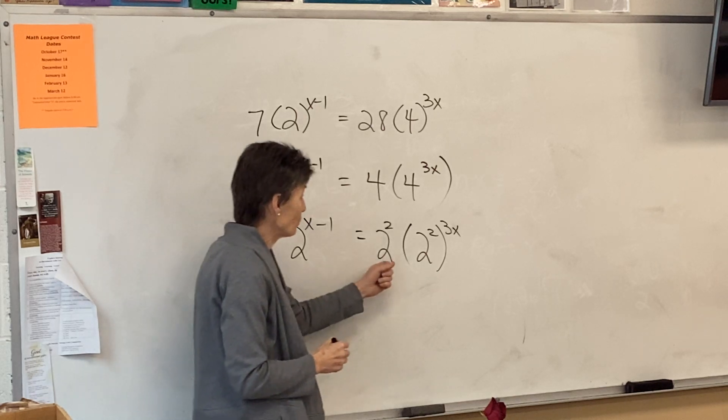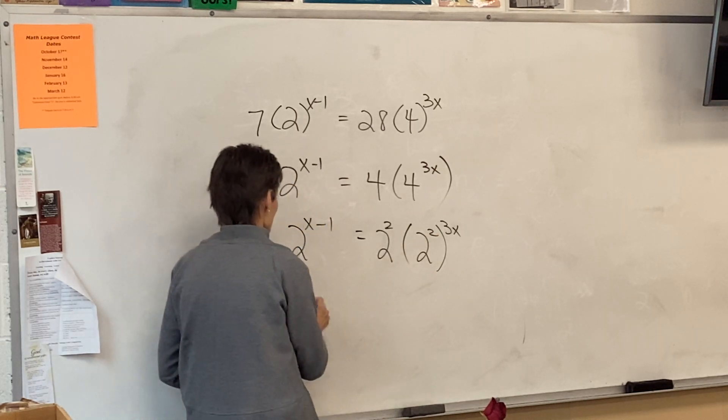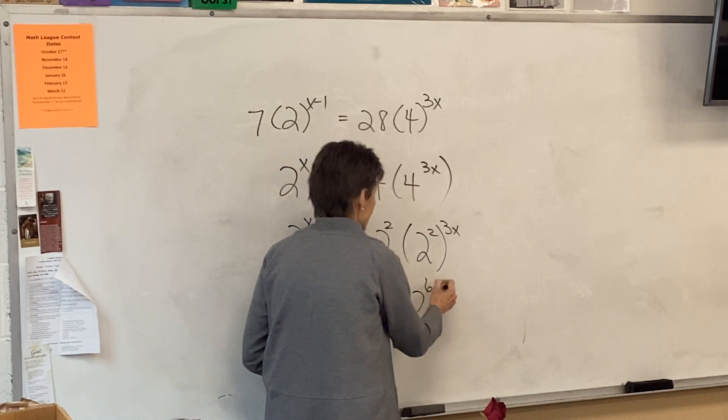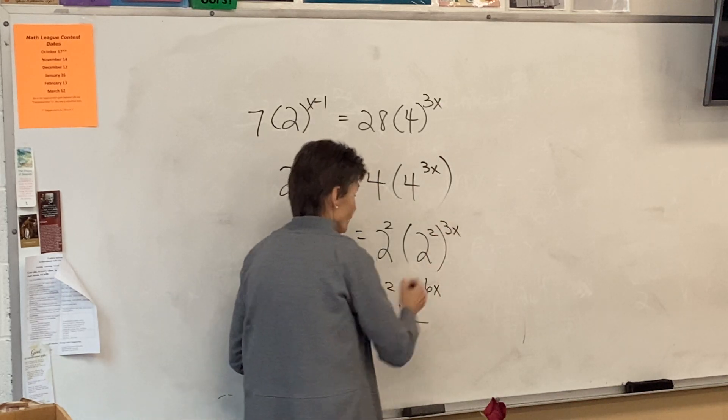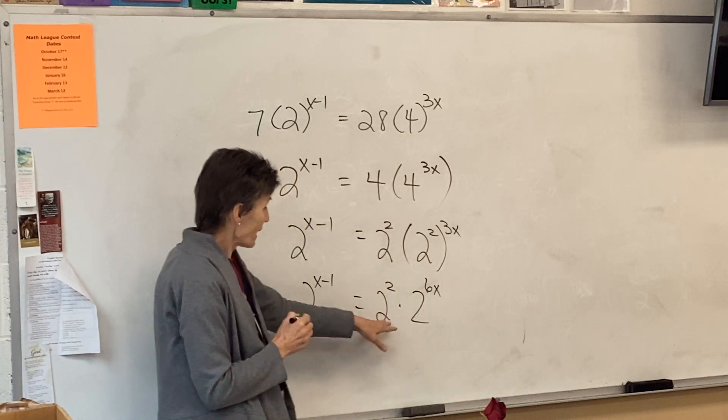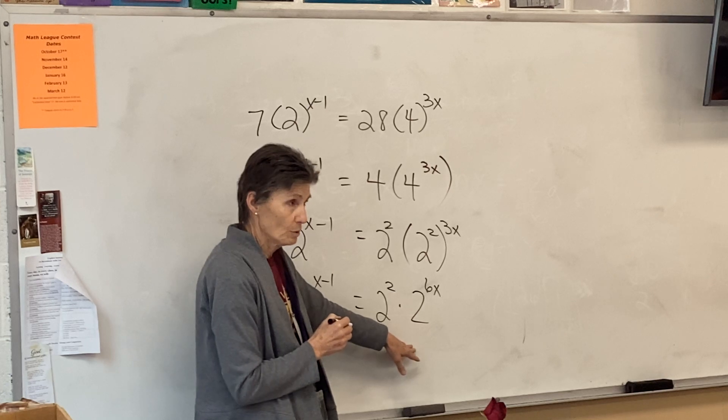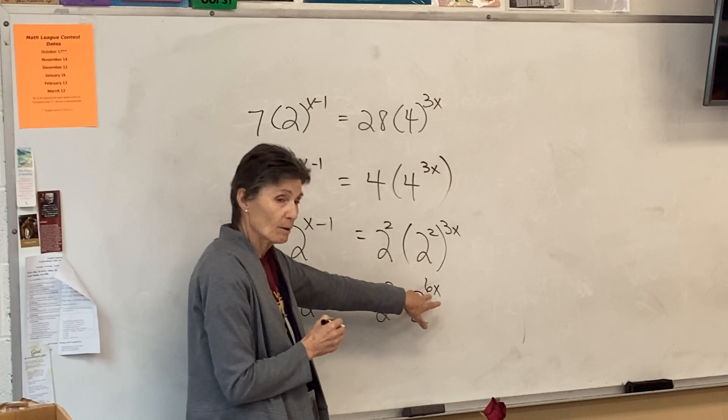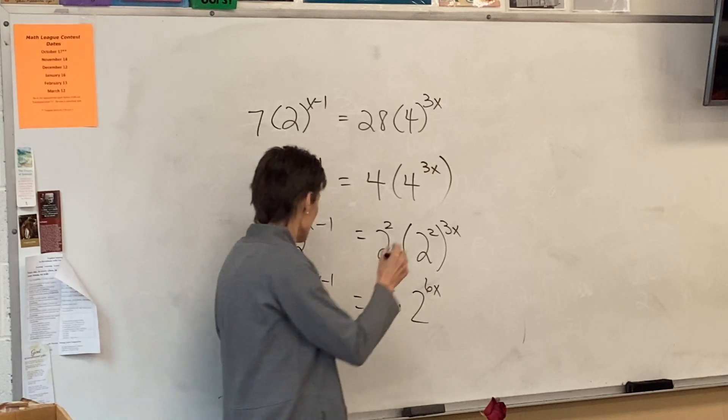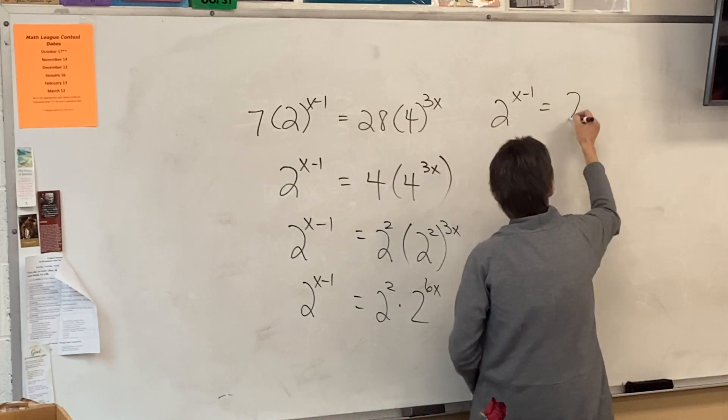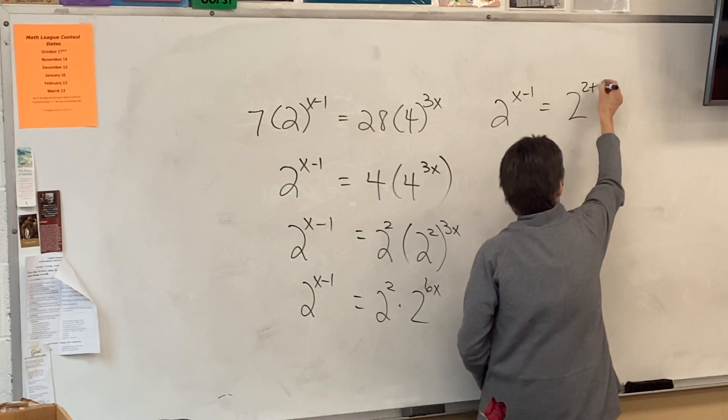Right? Now, these are both 2. Let's go ahead and take care of that first. So that's going to be 2 squared times 2 to the 6x. I'm going to multiply those two. Now, what happens when I have a 2 times a 2? What do I do with those exponents? Add them.